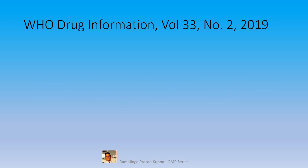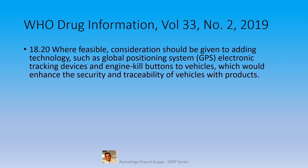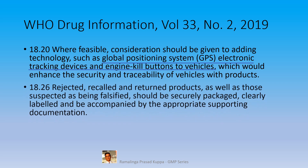WHO Drug Information volume 33, number 2, dated 2019 has some additional requirements. Section 18.2: where feasible, consideration should be given to adding technology such as global positioning system GPS, electronic tracking devices, and engine kill buttons to vehicles, which would enhance the security and traceability of vehicles with products. This section has additional requirements to have a GPS to track the container's exact location. Engine kill is a safety mechanism used to shut off machinery in an emergency when it cannot be shut down in the usual manner.